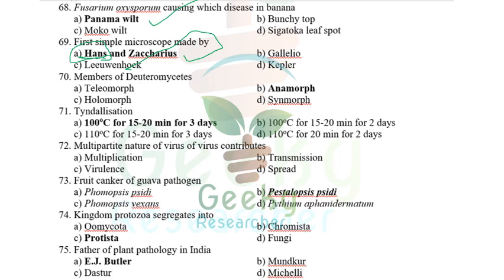Members of Deuteromycetes (Deuteromycotina) are called Fungi Imperfecti — dustbin fungi — because the sexual stage is absent. Only the asexual stage (anamorph) is present. Example: Fusarium.